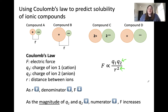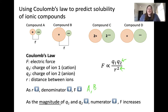This is similar to the predictions we made when looking at compounds A, B, C, and D. Compounds A and B have the same magnitude of charge but different distances — compound A has less distance between the ions, causing the denominator to decrease and the attractive force to increase. For compounds C and D, compound C has a greater magnitude of charges Q1 and Q2, so the numerator increases and the attractive force increases.